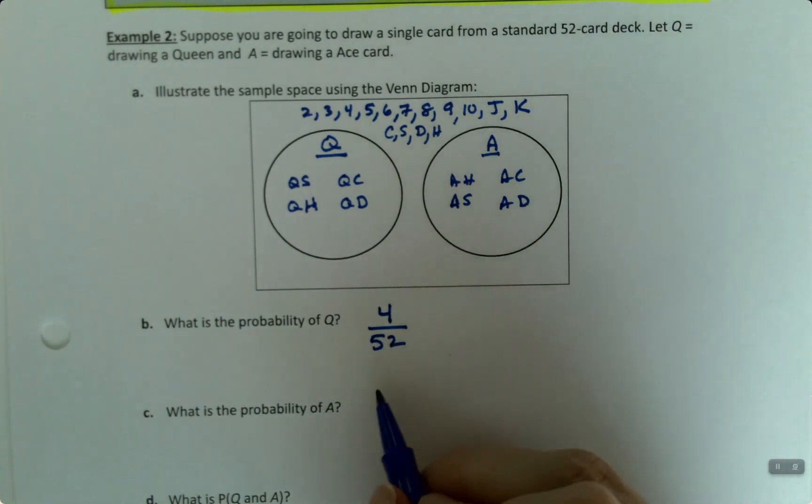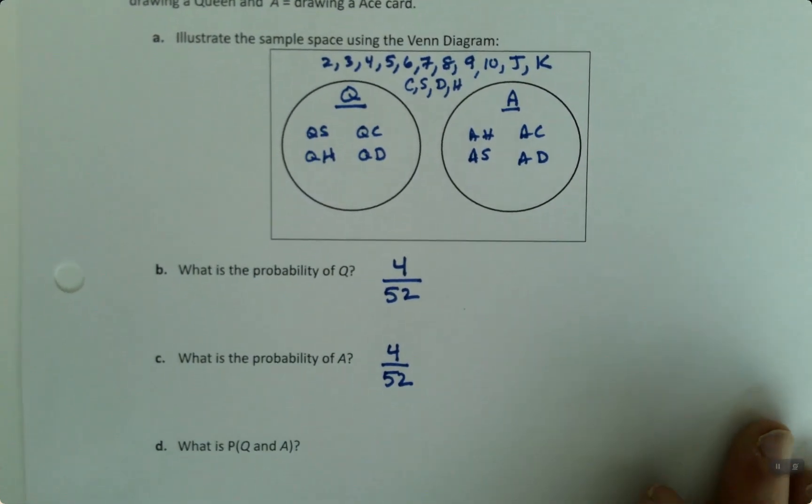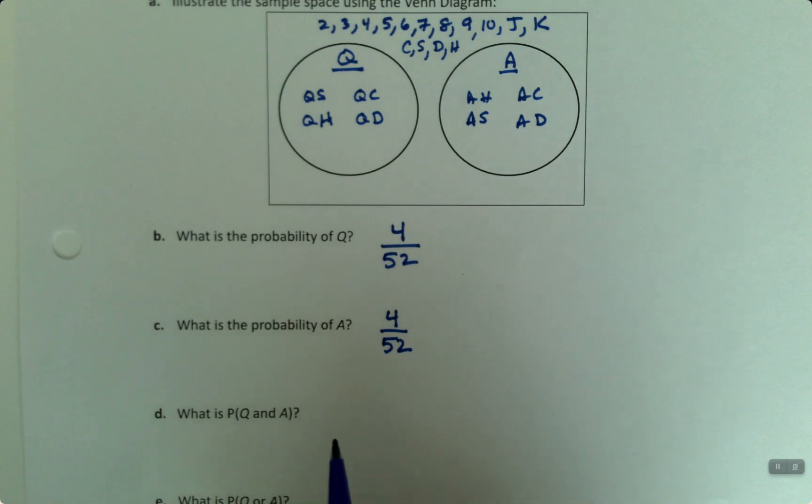And ace, similarly, is also four out of 52.